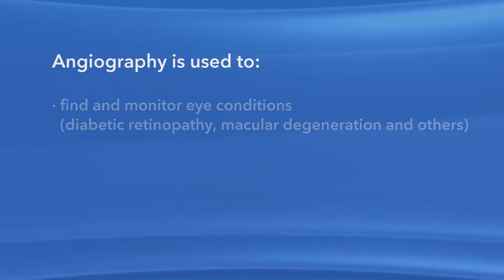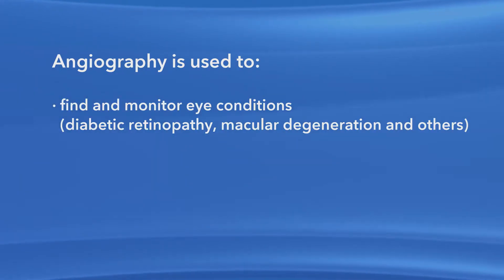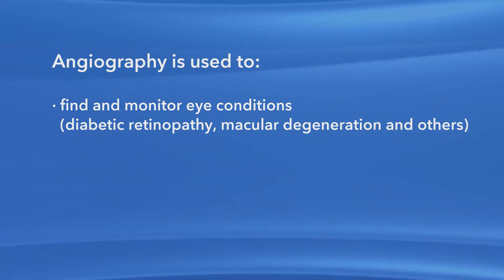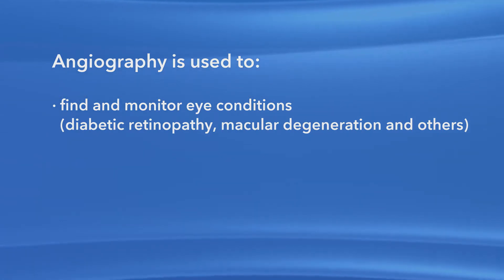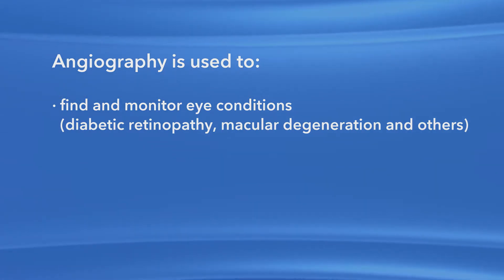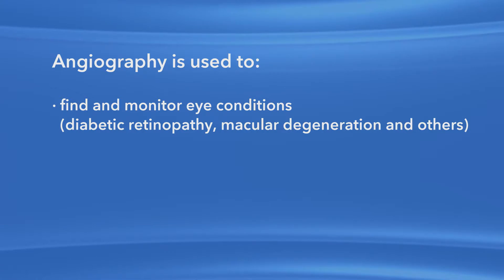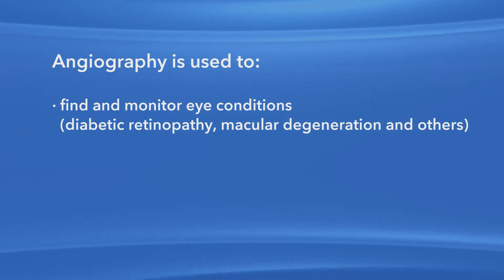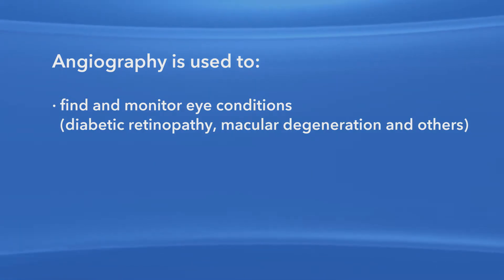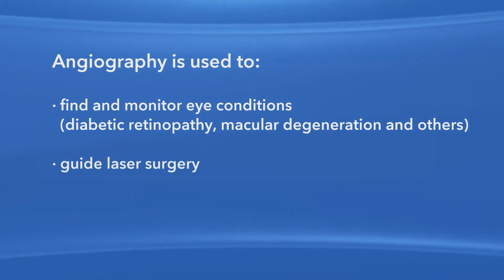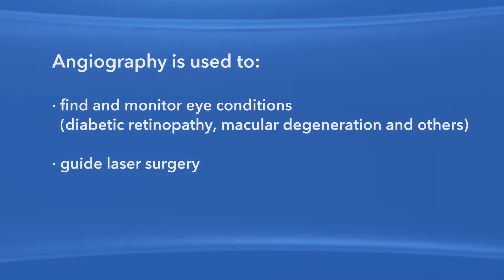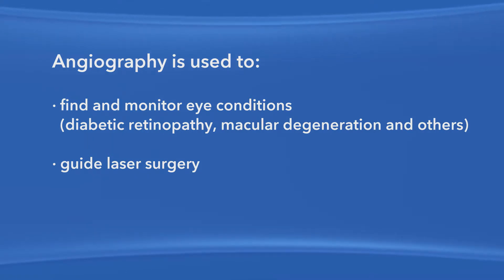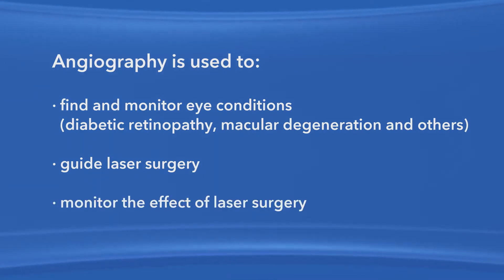Ophthalmologists use angiography to help diagnose and monitor certain eye conditions, such as diabetic retinopathy and macular degeneration, among others. Also, if you're going to have laser surgery on your retina, your ophthalmologist may use angiography to help guide the laser with pinpoint accuracy. After laser surgery, angiography may be used to help monitor the effect of the laser procedure.